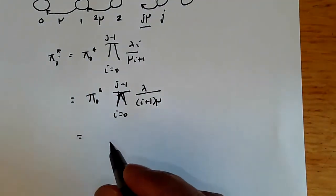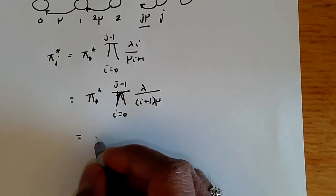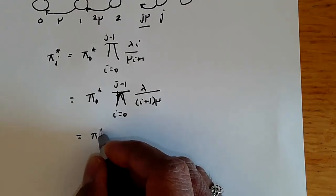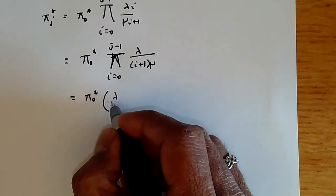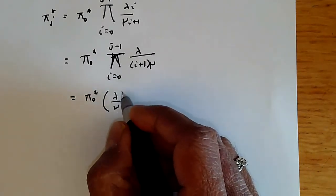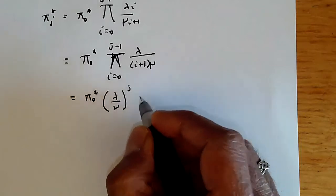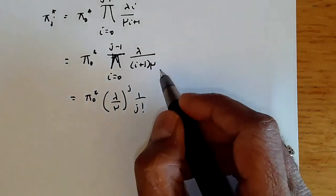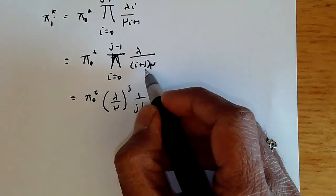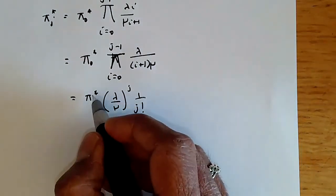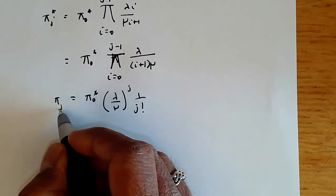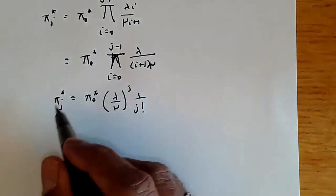And this can therefore be expanded as being pi 0 star lambda by mu to the power j times 1 over j factorial, because we're going to have this i plus 1, 0 to i minus 1 just because 1 over j factorial. And so the probability of being in the jth state, pi j star, is just this.